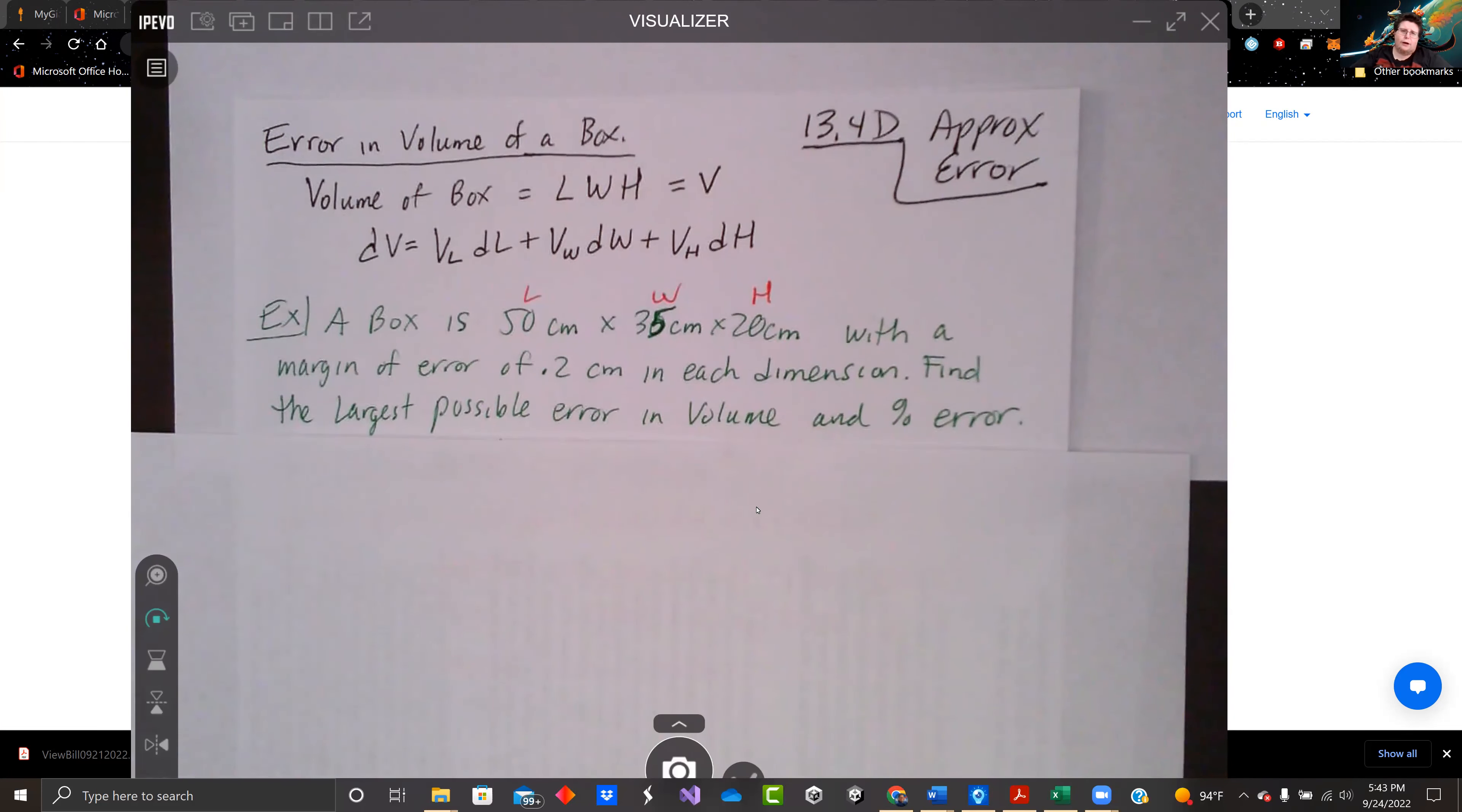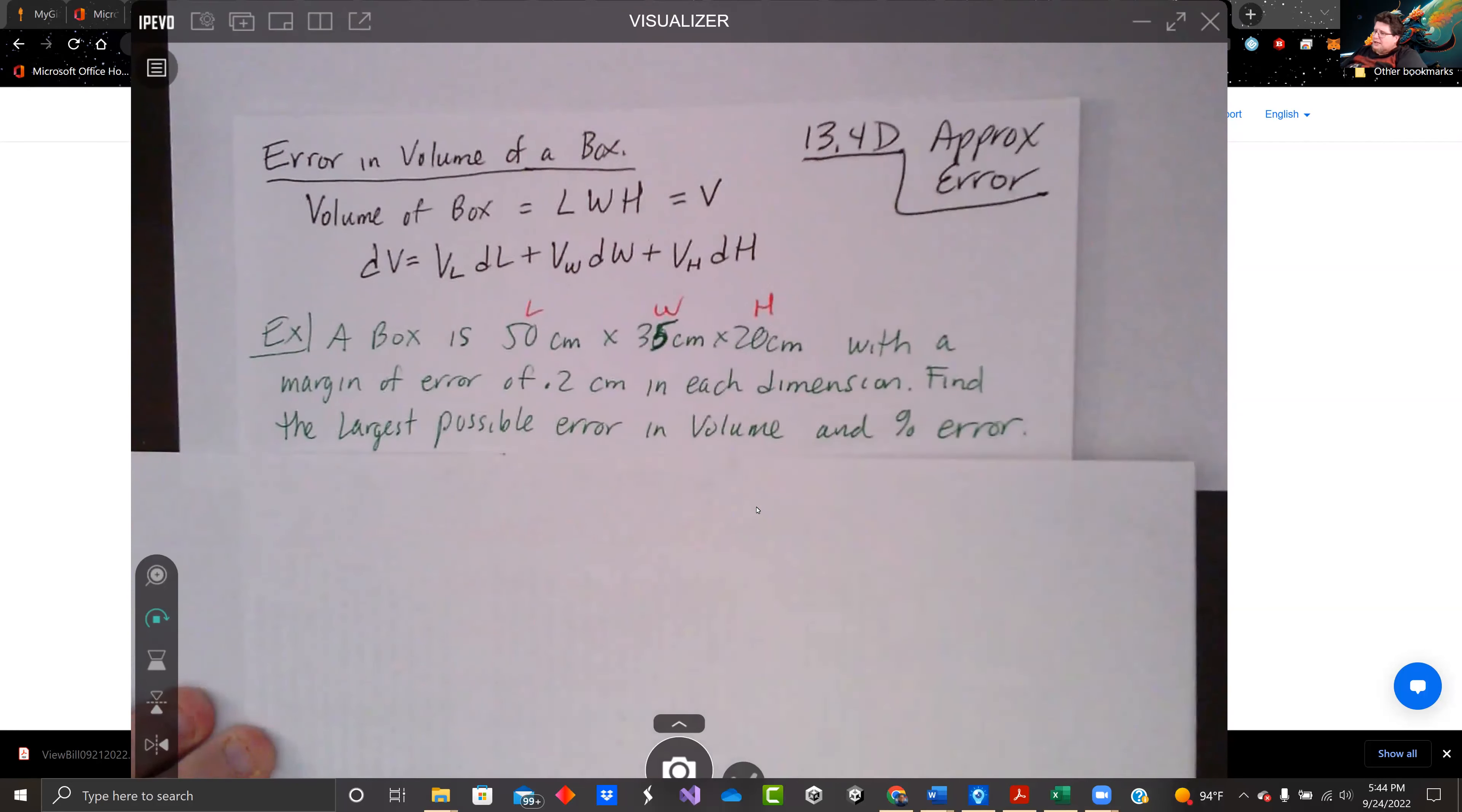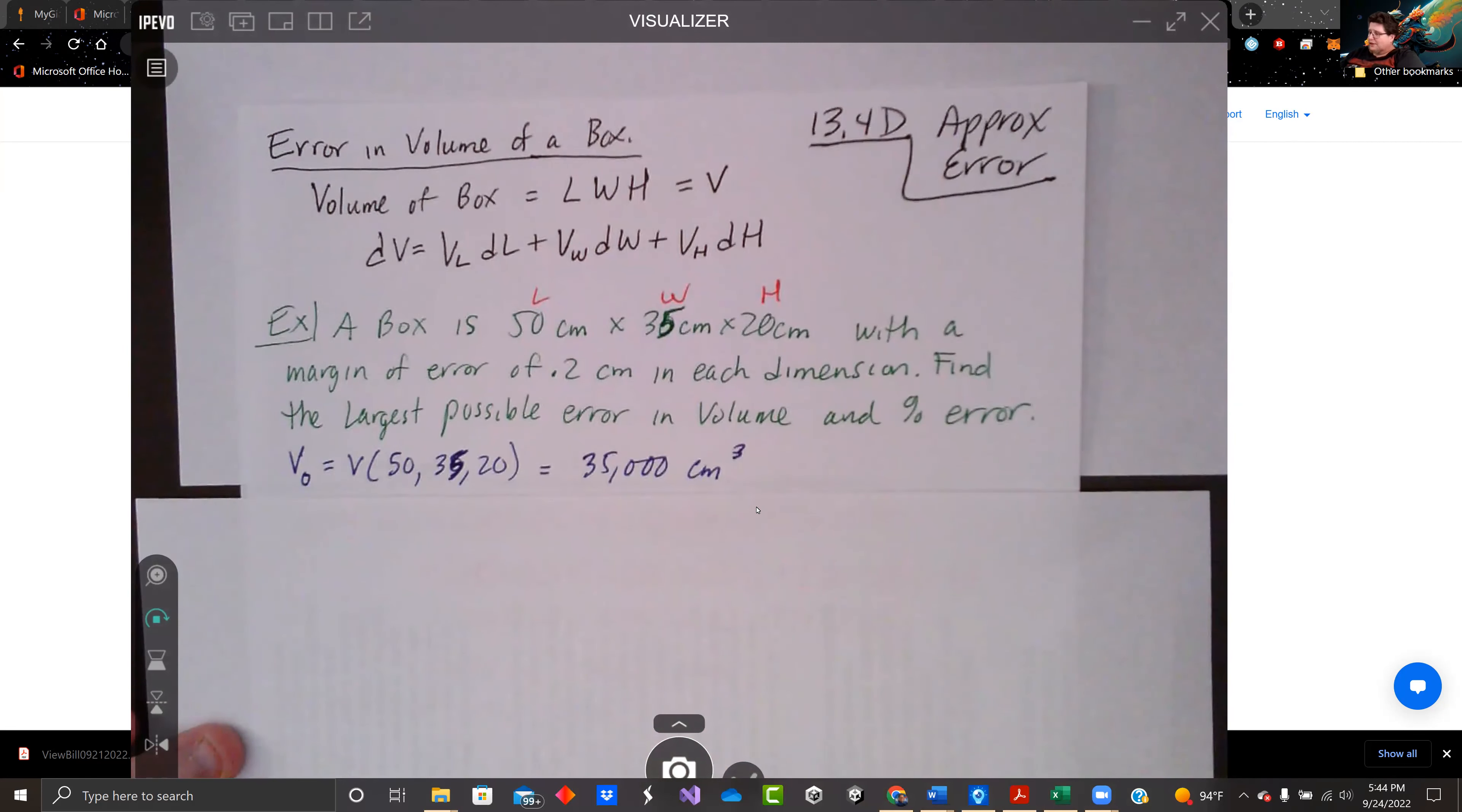So we're going to try to approximate delta V using this dV for this example problem right here. 50 centimeters, and we'll just say L is 50, W is 35, H is 20. It doesn't matter which one's which as long as we label them now so we won't make mistakes later on. We should see what the total volume actually is. If you plug in 50 and 35 and 20 into L times W times H, we are going to get 35,000.